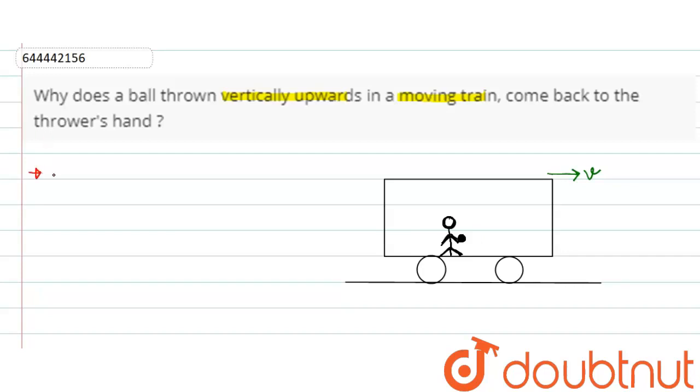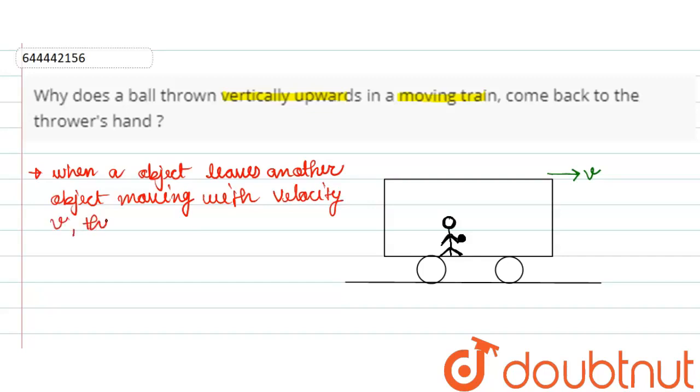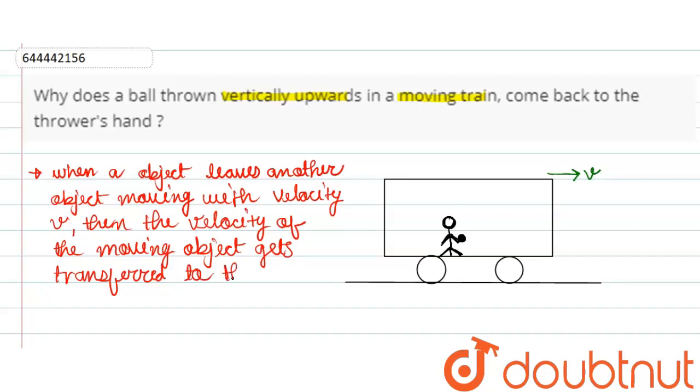concept that we will be using in this question is: when an object leaves another object moving with velocity v, then the velocity of the moving object gets transferred to the object that has been left.